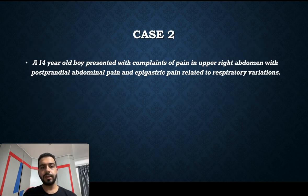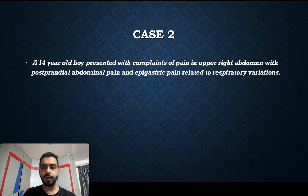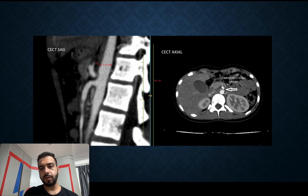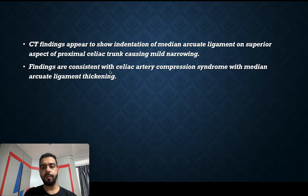The next case was a 14-year-old boy who presented with complaints of pain in the upper right abdomen, with postprandial abdominal pain and epigastric pain related to respiratory variations. On CCT sagittal and axial sections, the proximal aspect of the celiac trunk is significantly narrowed, and the median arcuate ligament is thickened, seen on the sagittal section with a thickness of 5.3 mm.